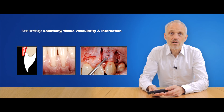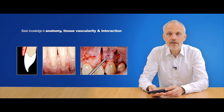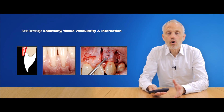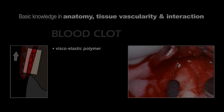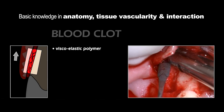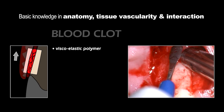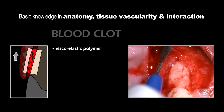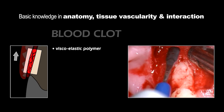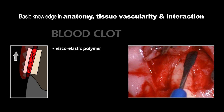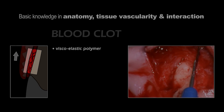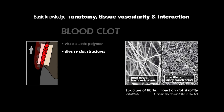The blood clot underneath the flap is the most elastic polymer the human body can produce. But not all blood clots are the same — different patients have different clots with different behaviors. For example, obese or diabetic patients produce fibrin fibers that are thicker than normal. A fibrin clot consisting of thin fibers with many branch points is more elastic than one consisting of thick fibers.